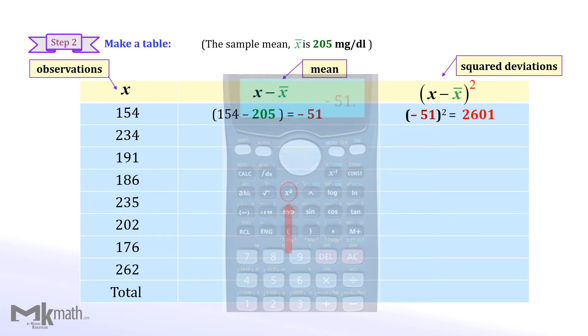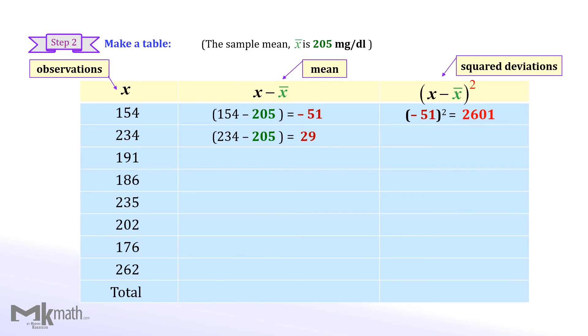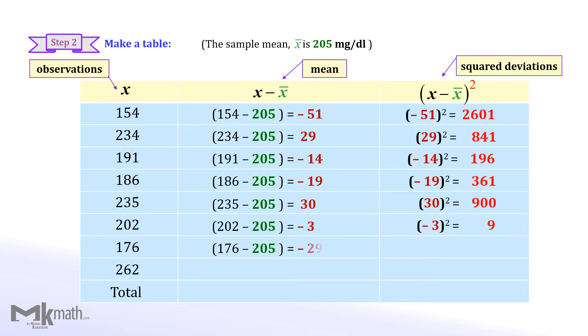For 234, 234 minus 205 to get 29. As soon as we get 29, square it to get the squared deviation of 841. Repeat the same process all the way to the last observation 262.